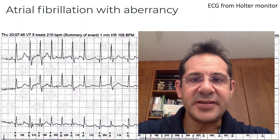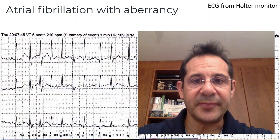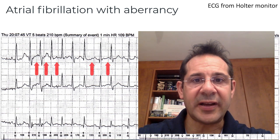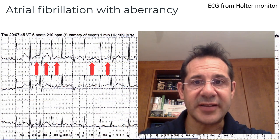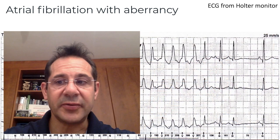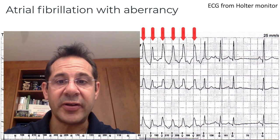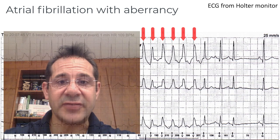This is an ECG recording of atrial fibrillation with aberrancy. You'll see during the recording that there are irregular wavy lines between the QRS complexes. These irregular wavy lines are atrial fibrillation activity — irregular electrical activity in the top chamber of the heart. Towards the end of the tracing, the beats are broad rather than narrow because electricity is moving more slowly through the heart, caused by the irregularity of the atrial fibrillation.